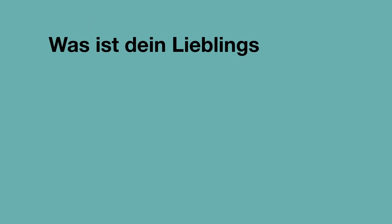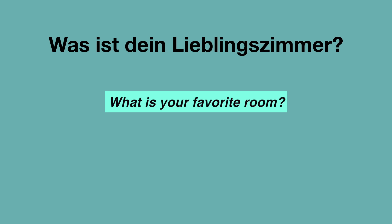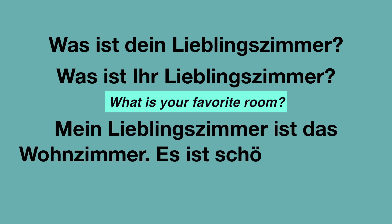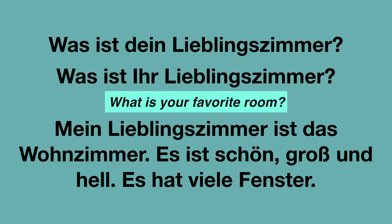Was ist dein Lieblingszimmer? Oder in der Sie-Form: Was ist Ihr Lieblingszimmer? Both mean: What is your favorite room? Und die Antwort, zum Beispiel: Mein Lieblingszimmer ist das Wohnzimmer. Es ist schön, groß und hell. Es hat viele Fenster. My favorite room is the living room. It is beautiful, big and bright. It has many windows. Hell is a positive word, it means bright.